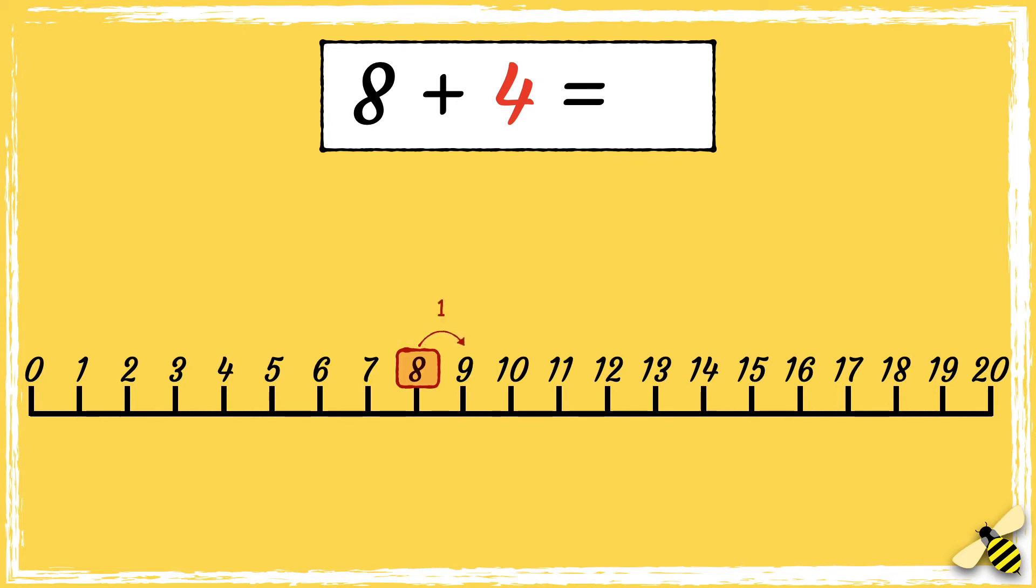1, 2, 3, 4. We've landed on 12. So 8 add 4 equals 12.